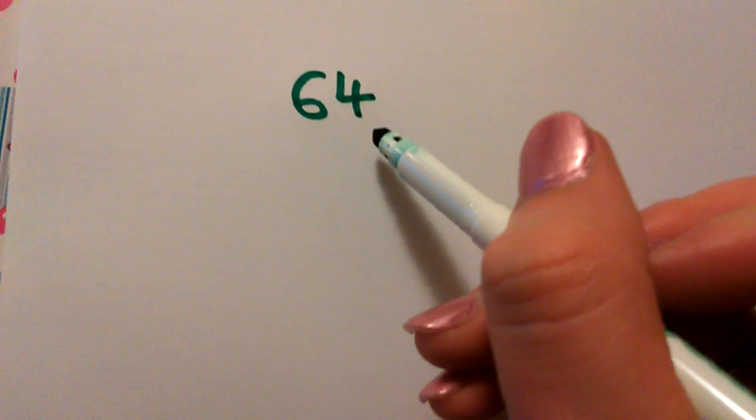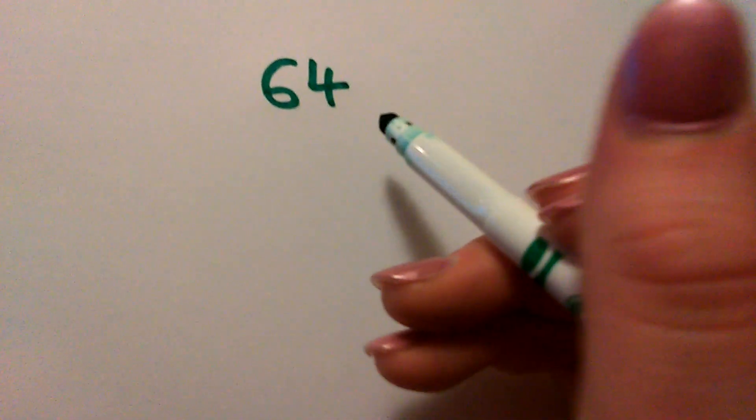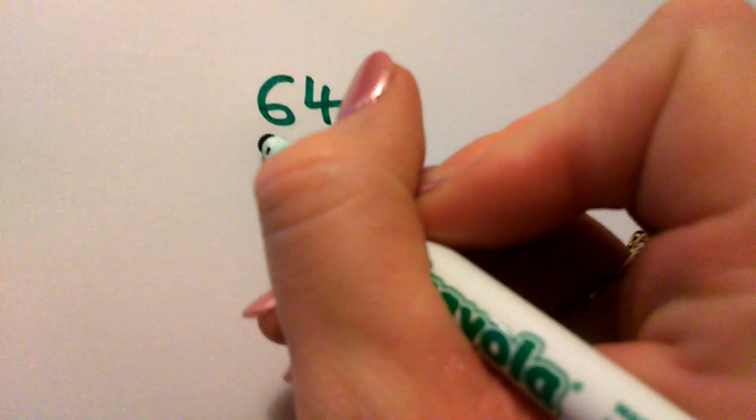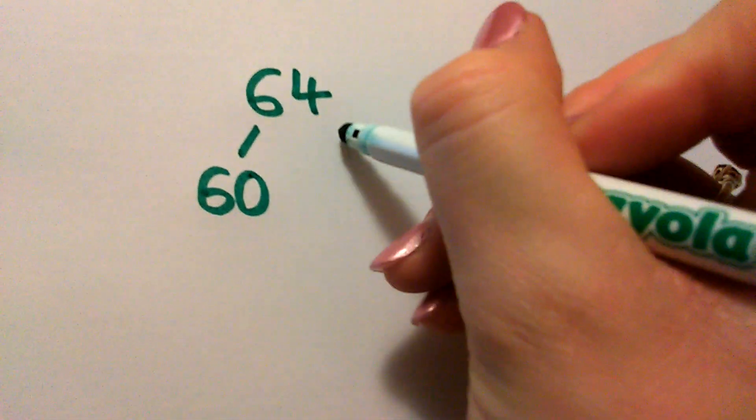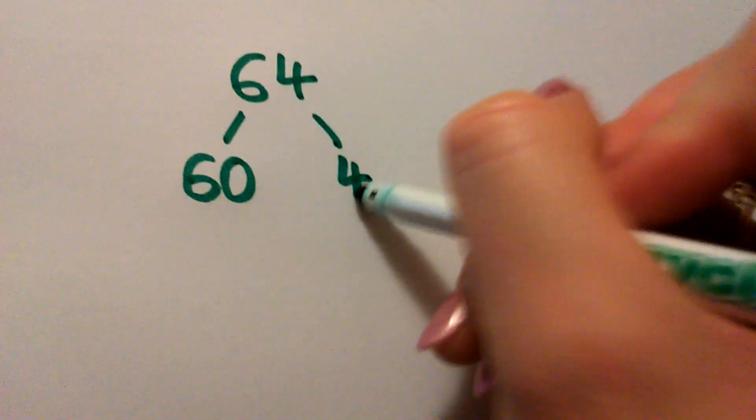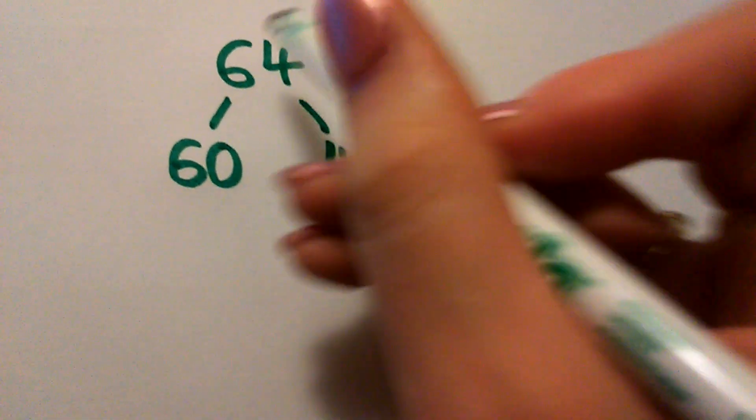So let's take, for example, the number 64. What I'm going to do first is I'm going to partition it into the tens and the units. So 60 and 4 make 64.